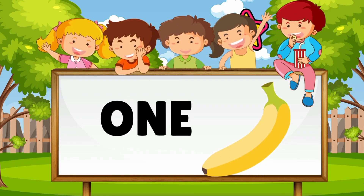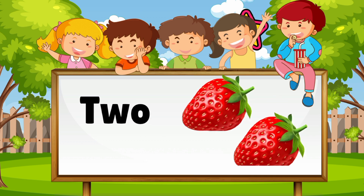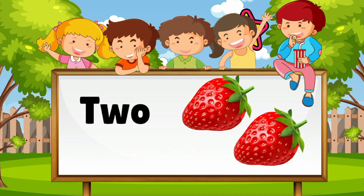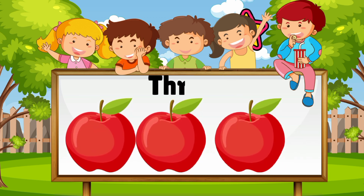1 ONE — 1 banana. 2 TWO — 2 strawberries. 3 THREE — 3 apples.